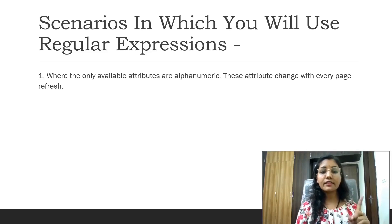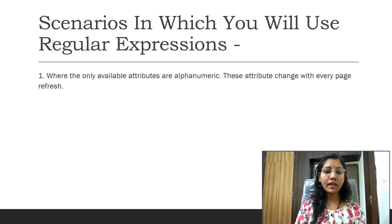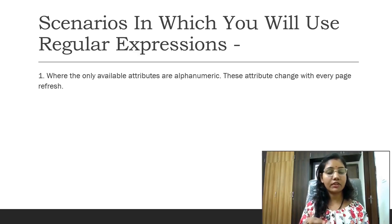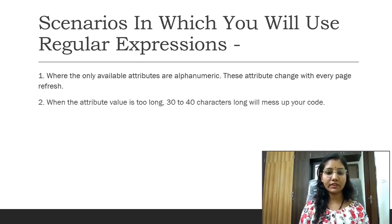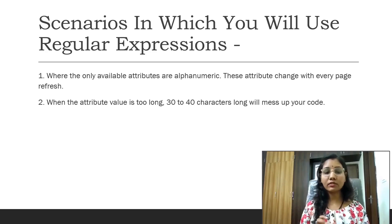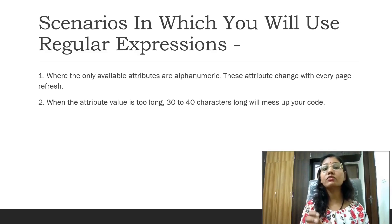The first scenario is where the only available attributes are alphanumeric and these attributes change with every page refresh. In your particular tag, there is only a single attribute and the value of this attribute is too long or it is changing on every page refresh — in that scenario you have to use the regex function. The second scenario is when the attribute value is too long, like 30 to 40 characters, which will mess up your code. We have to use some part of this string — a substring — and using this substring we can write our own XPath or CSS with the help of regex functions.